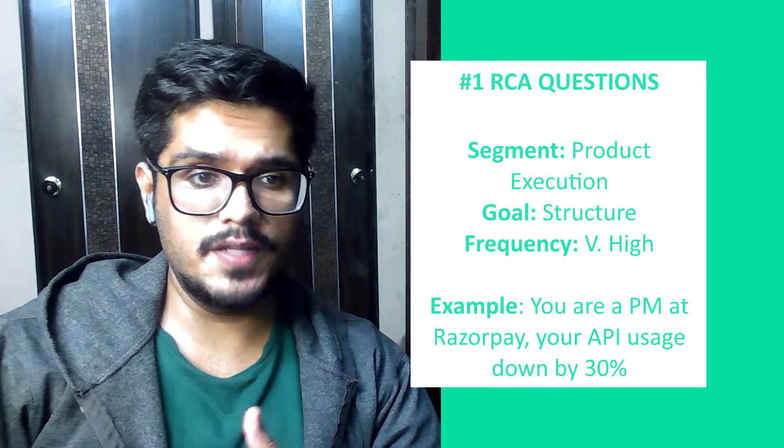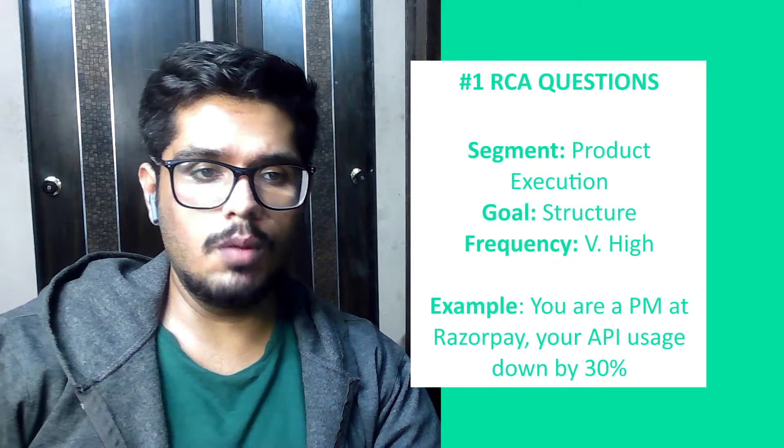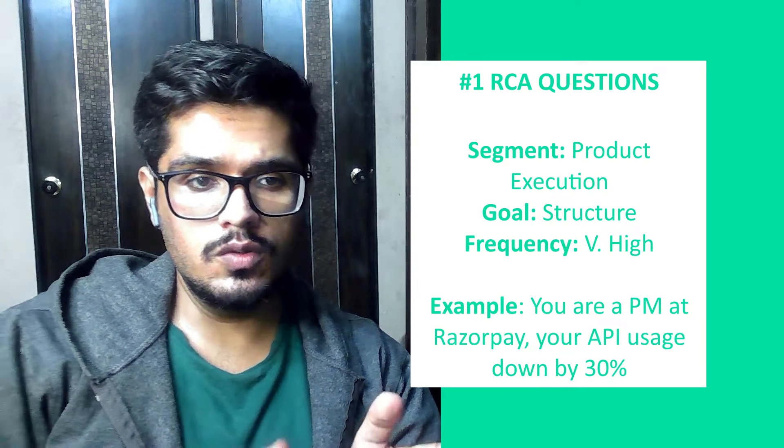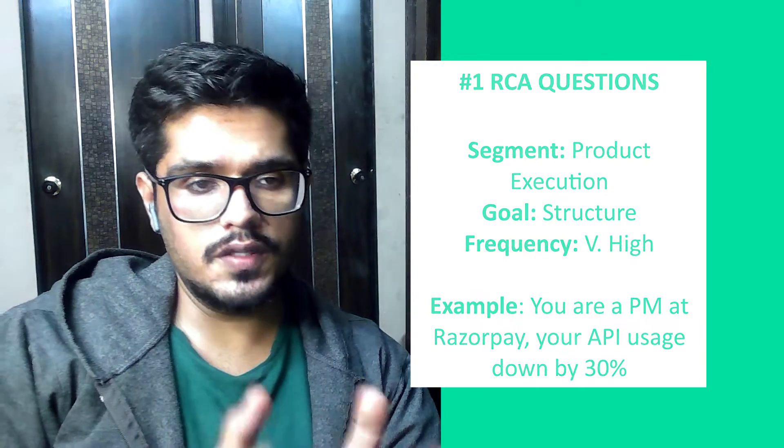Question one is an RCA question: you're a PM at Razorpay and your API product usage has fallen by 30% — how would you go about this? In a typical non-API question, you'd look at the user journey and figure out where drop-offs are happening. But in this specific case, because this is an API product, there is no user journey per se, and the issue can also be most likely an internal issue because APIs don't really have a UI.